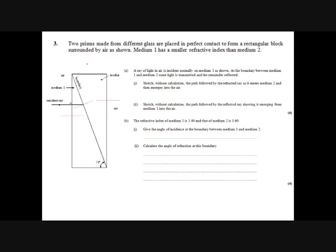This question, we've got two prisms made from different sorts of glass, make a rectangular block, and crucially get your head around this, medium one has a smaller refractive index than medium two, so as it goes from medium one into medium two, it will refract towards the normal.